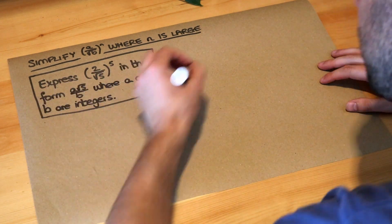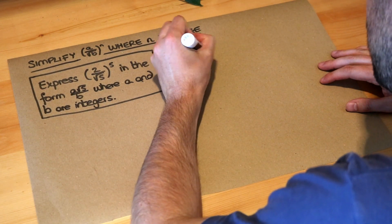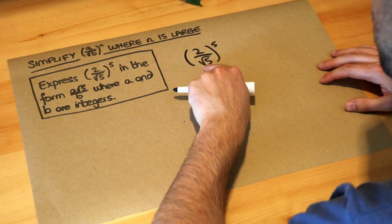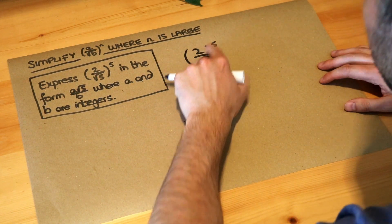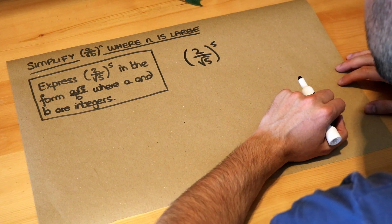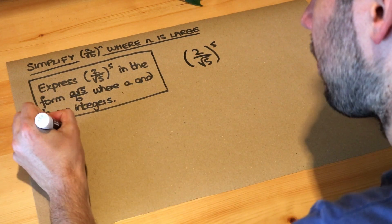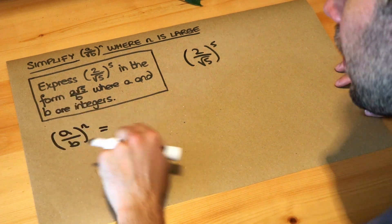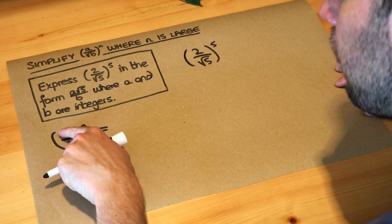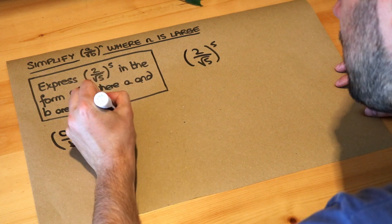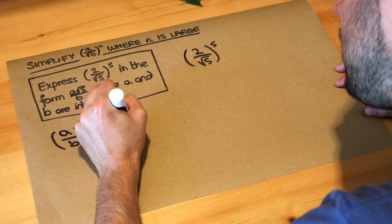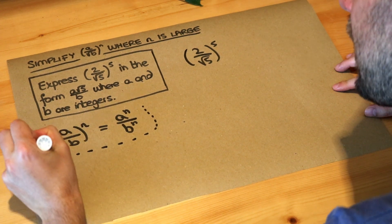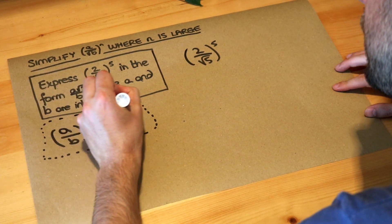So let's write that out. We're trying to work out 2 over root 5 to the power of 5. In general, if you have a over b all to the power of n, then you apply that power of n to both the numerator and the denominator, giving a to the power of n over b to the power of n. That's the key algebraic property we want to use here.